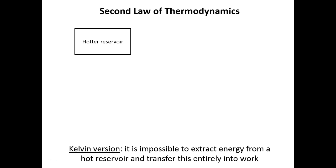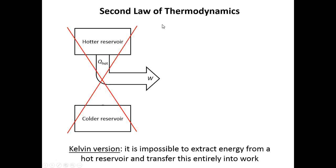What does that mean? Let's say you have a hot reservoir and here's a colder reservoir. Naturally, heat will flow from hot to cold. But the second law states it's impossible to convert all of that heat into useful work so that none flows to the cold reservoir. This is forbidden by the second law.